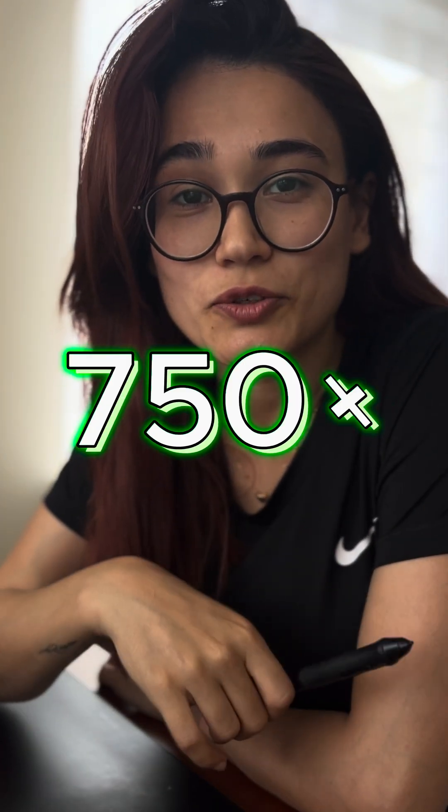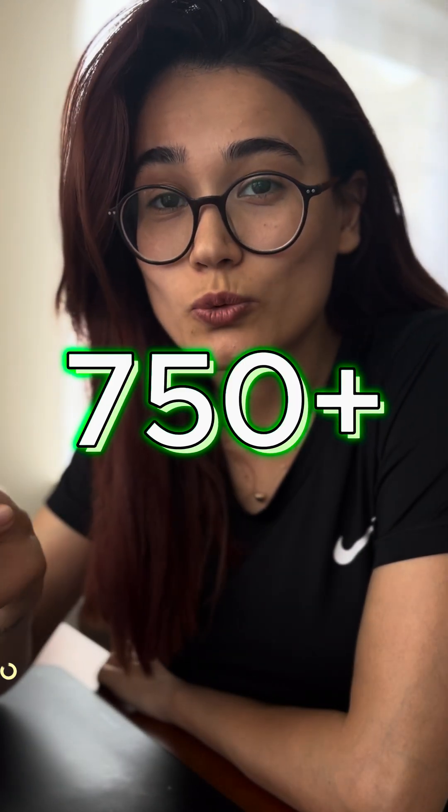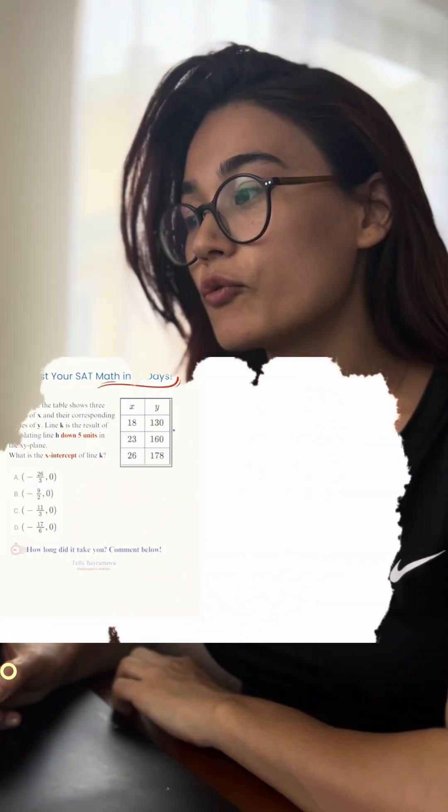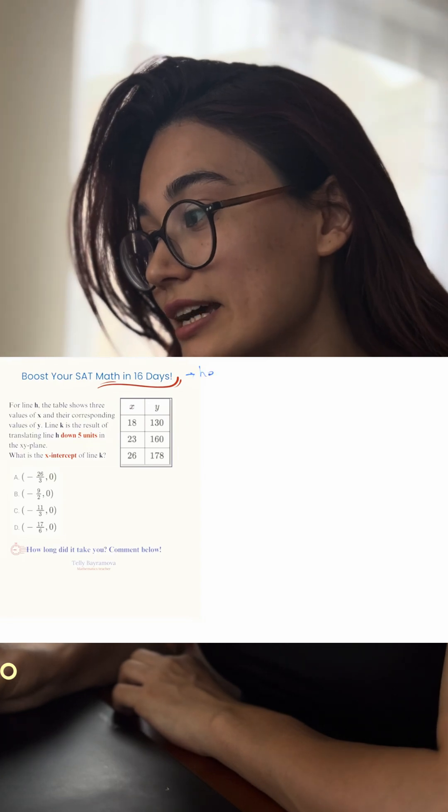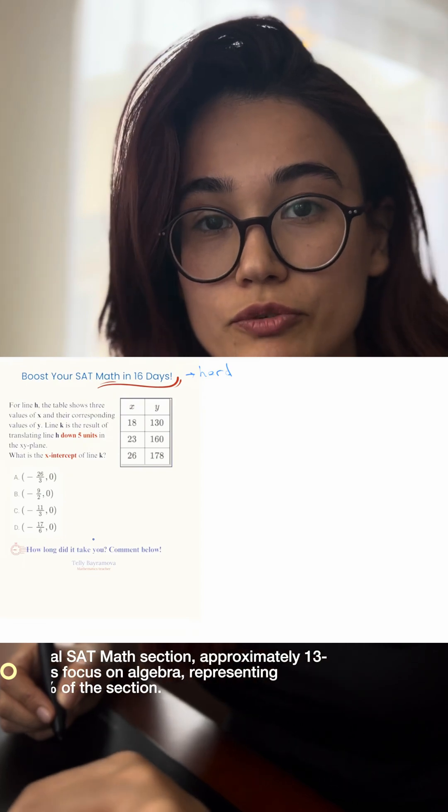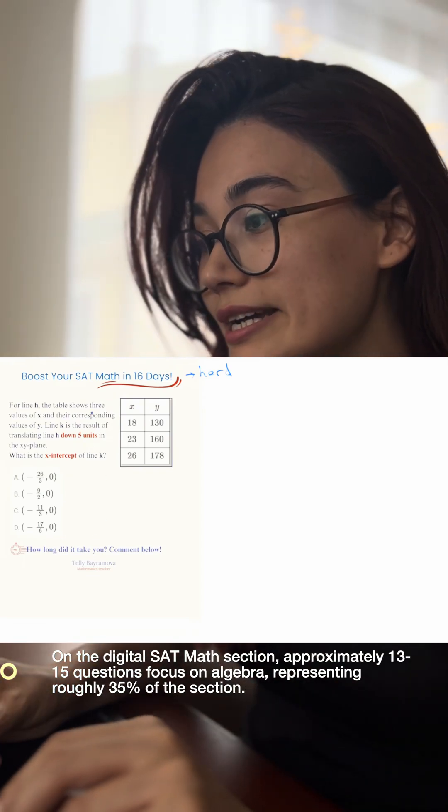If you want to get more than 750 on the SAT exam, you need to know this well and follow my page. This is for the May exam and I want to solve this question for you, which is one of the hard sections for the SAT. It's about linear algebra. As you know, 35 percent of the algebra questions will be about this topic. So let's read line h.